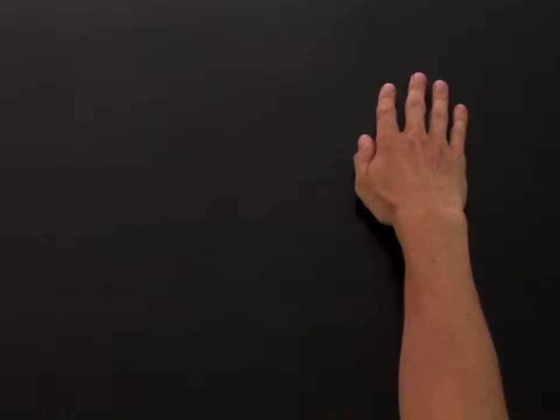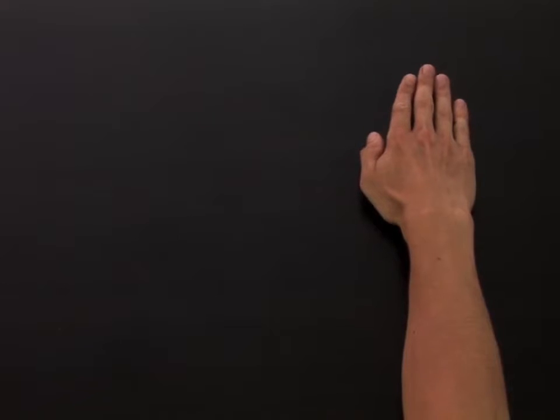This exercise is designed to mobilise your wrist joints. You will need a table to rest your hand on. Begin by sitting on a chair and rest your hand palm down on your table in front of you.